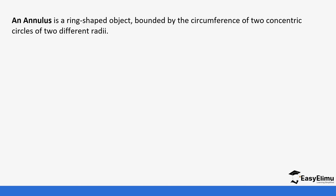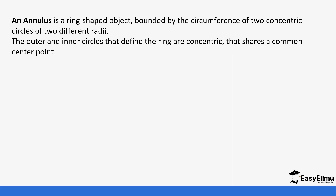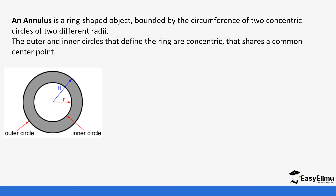An annulus is a ring-shaped object bounded by the circumference of two concentric circles of two different radii. The outer and the inner circles that define the ring are concentric — they share a common center. If you look at these two circles, the shaded region is what we refer to as the annulus. We have an inner circle and an outer circle, and both of them have two different radii: the big circle has capital R and the small one has small r.